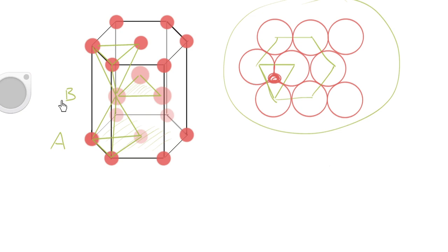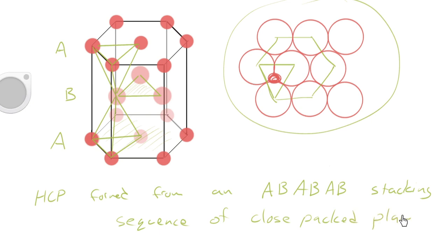These ones in the middle, we'd have to call something else, maybe B, because they're not directly over top of the atoms on the bottom. But then when we get to the third layer up, you can see that the third layer is directly over top of the bottom layer. So we would call that the A positions again. And for that reason, we sometimes say that HCP is formed from an A, B, A, B, and so on, stacking sequence. It's important to note that's a stacking sequence of close-packed planes.